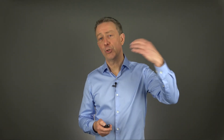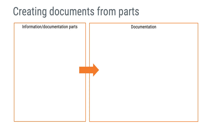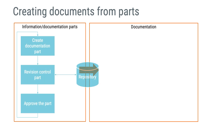Now it's time to look at how information can be converted into documents. The idea is that we have information parts we want to convert into documentation. To honor document control principles, we should establish a mechanism that results in controlled and pre-approved parts, which can later be assembled into documents. A workflow that includes creation, revision control, and approval of documentation parts will take you far. If all parts are under revision control and approved, the final document will likely be in good shape once established.